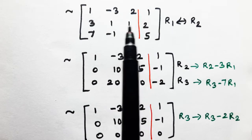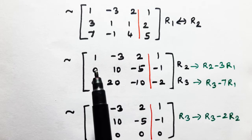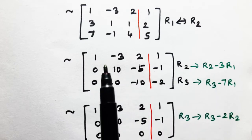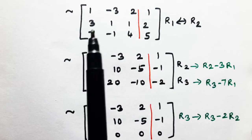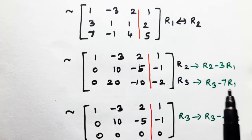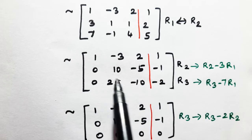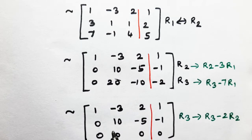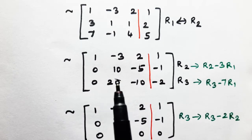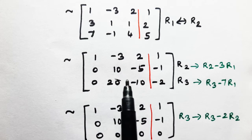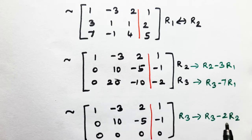After the operation R2 - 3R1, R2 becomes [0, 10, -5, 1]. Then R3 becomes R3 minus a multiple — R3 starts as 7. We continue and get values 10, 2, 20, -10. Multiplying through R2 and R3 accordingly.